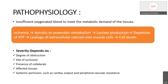Coming to the main pathophysiology, acute limb ischemia is due to insufficient oxygenated blood to meet the metabolic demands of the tissue. Ischemia leads to a shift from aerobic to anaerobic metabolism, leading to lactate production, which leads to depletion of ATP, consequently leading to leakage of extracellular calcium into muscle cells, eventually leading to cell death. The severity depends on the degree of obstruction, site of occlusion, presence of collaterals, the affected tissues, and systemic perfusion.